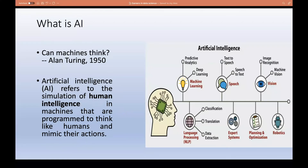Next is expert systems — highly complex applications where AI is used for part of decision making, such as in defense. Then there is planning and optimization, used for supply chain demand prediction or e-commerce optimization. Last is robotics, which is quite popular — here software and hardware are used together to make tasks completely automatic. This is just an overview of AI and its subfields and branches.